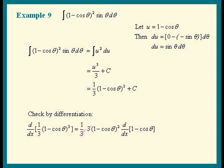The 3's cancel. We have 1 minus cosine theta squared times the derivative of 1 minus cosine theta, which is 0 minus a minus sine theta. And there you see our integral. All done.